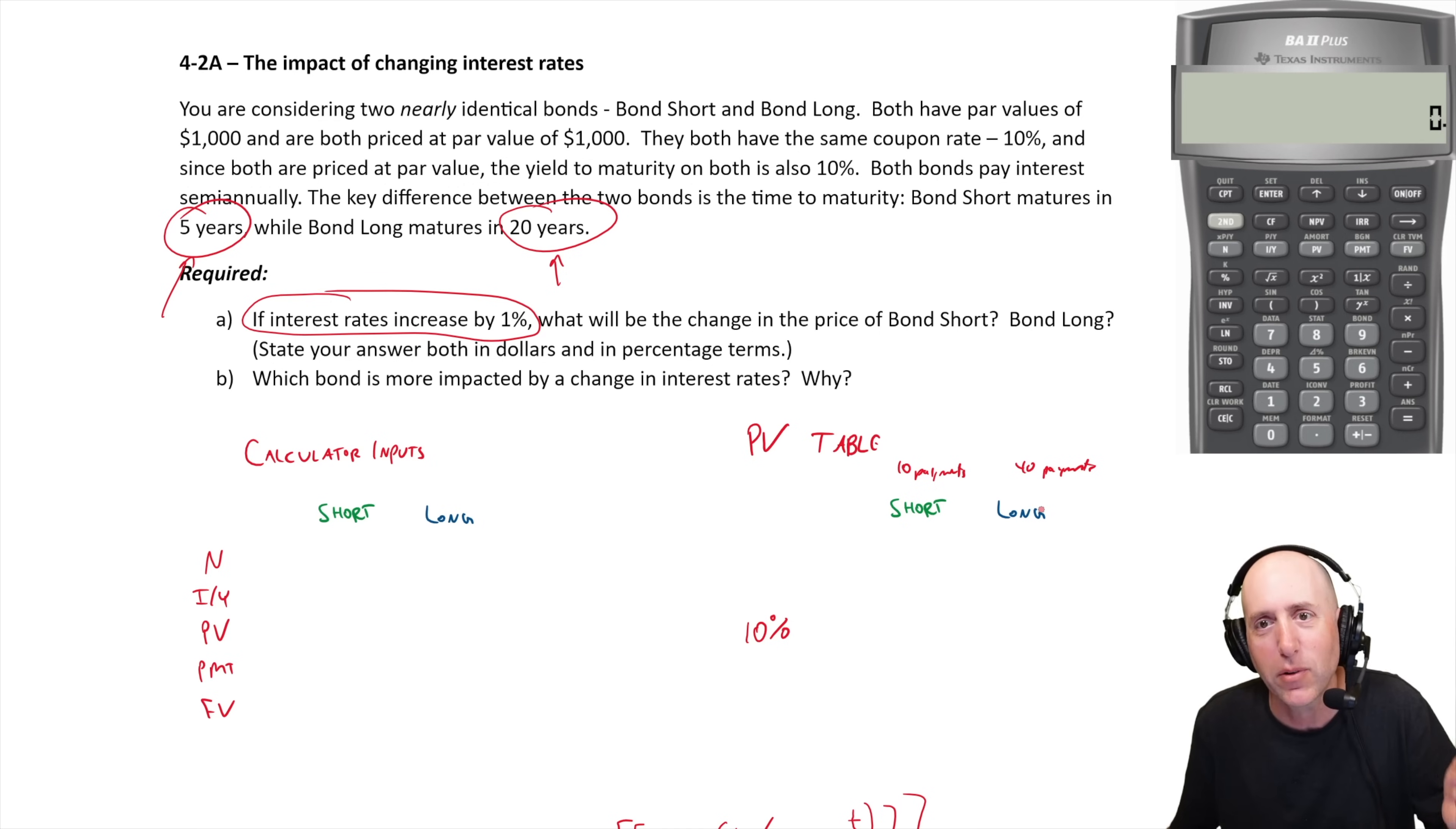Since they're both par value, the yield to maturity is ten percent also, because coupon rate when it equals the yield to maturity, that's how bonds issue at par. Both bonds pay interest semi-annually. The key difference is their time to maturity - Bond Short is five years, Bond Long is 20.